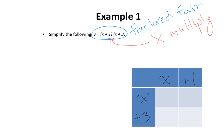Let's begin by multiplying x by x. x multiplied by x is x squared. x multiplied by positive 1 is positive 1x. Then we have positive 3 multiplied by x, which is positive 3x. And positive 3 multiplied by positive 1 is positive 3, because a positive multiplied by a positive stays positive.